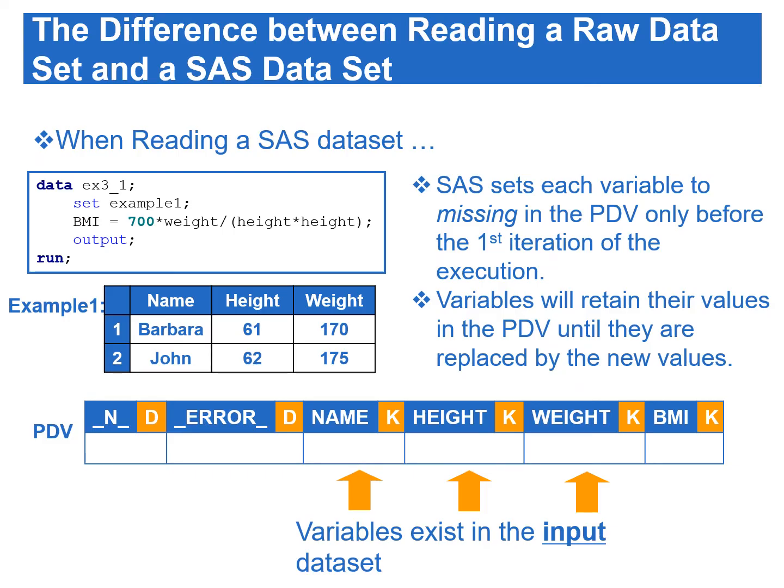In the last video on data step processing, we learned the differences between reading a raw data set and a SAS data set. In the program data vector, or PDV, _N_ and _ERROR_ are the automatic variables. The rest of the variables, such as name, height, weight, and BMI, are non-automatic variables.